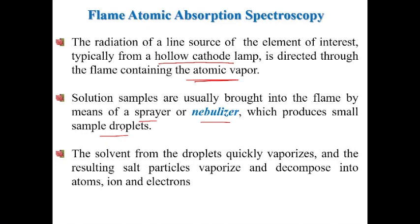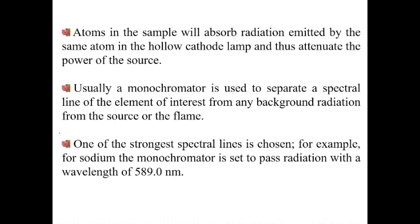Some atoms get excited and some get ionized during atomization. Atoms in the sample absorb radiation emitted by the same element in the hollow cathode lamp. The cathode of the hollow cathode lamp is always made of the element whose concentration is being determined — for example, if determining iron content, the cathode is made of iron. Attenuation of the radiation is then measured. A monochromator is used to separate the spectral line of the element of interest from any background radiation. For sodium, the monochromator is set to pass radiation at 589 nm.